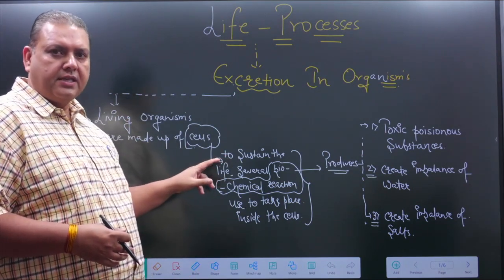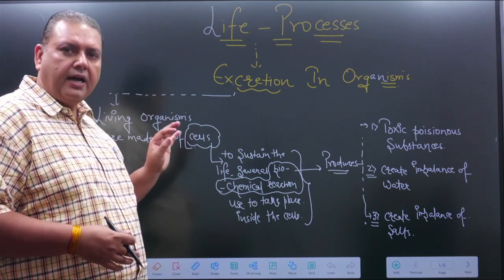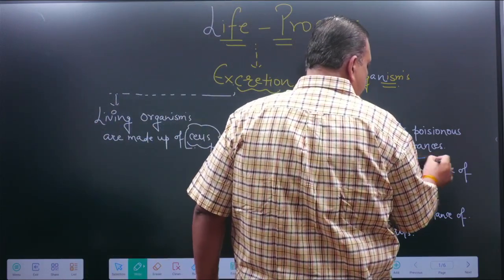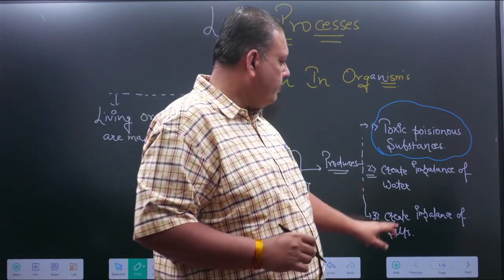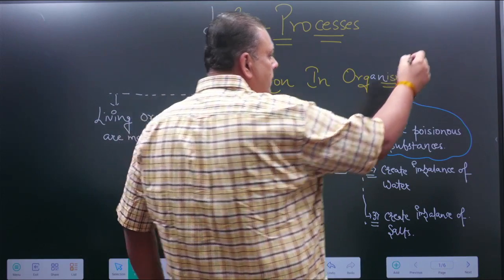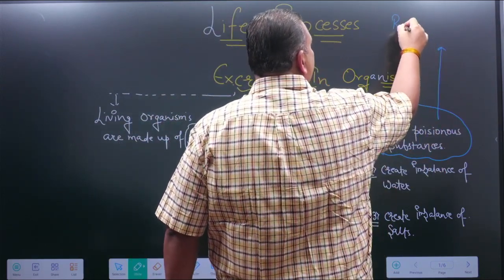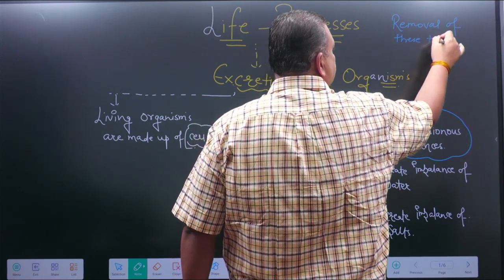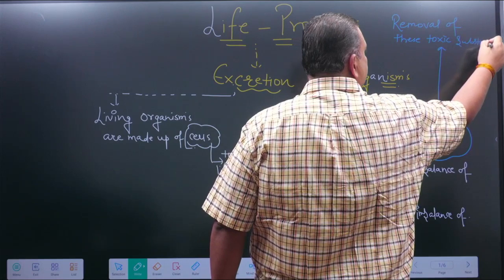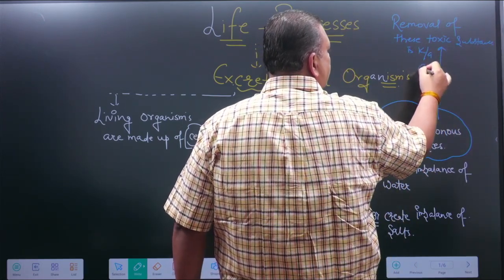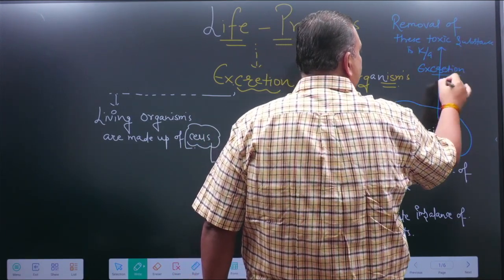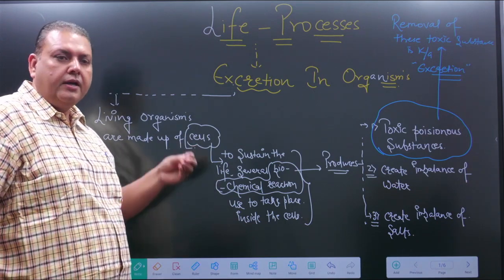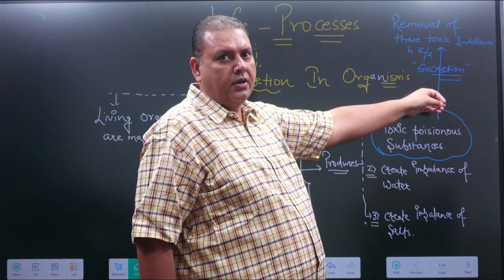Living organisms are made up of cells, and inside the cells several biochemical reactions are going on continuously. These biochemical reactions lead to the formation of toxic or poisonous substances, and they also create an imbalance of water and salt inside our body. Removal of these toxic substances is known as excretion. Whenever we talk about the term excretion, we say that due to the chemical reactions taking place inside the cells, several toxic substances are formed, and their removal is known as excretion.